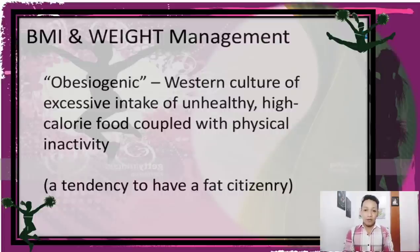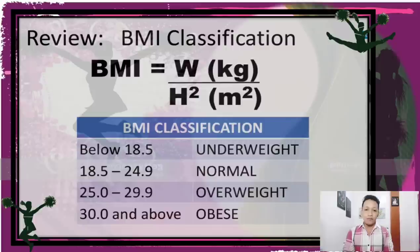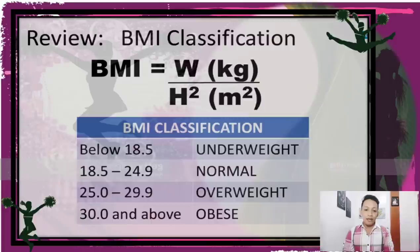This is a review of the BMI classification. The formula for BMI is: BMI equals weight in kilograms divided by height squared in meters. BMI classifications: below 18.5 is underweight; 18.5 to 24.9 is normal; 25.0 to 29.9 is overweight; and 30.0 and above may indicate obesity.